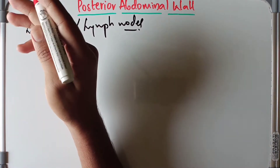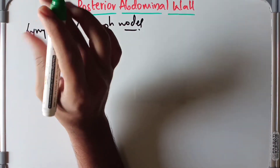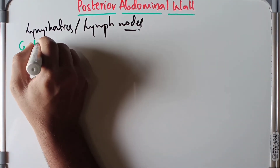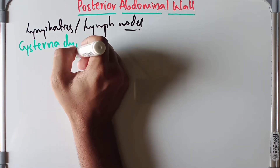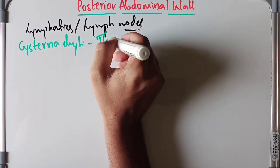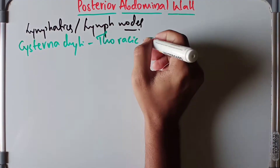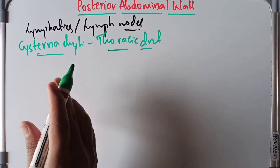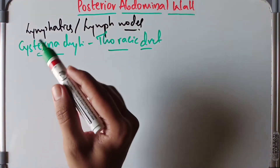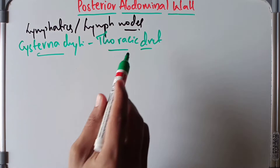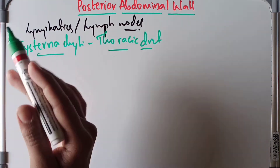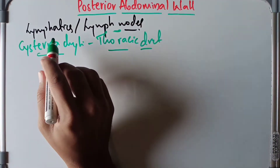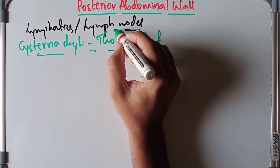These lymph vessels drain the posterior abdominal wall and most of the abdominopelvic organs, except some parts of the liver. They drain into the cisterna chyli and the thoracic duct, which is the major lymphatic duct. These lymphatic streams are intercepted by a series of lymph nodes before reaching the cisterna chyli and the thoracic duct.